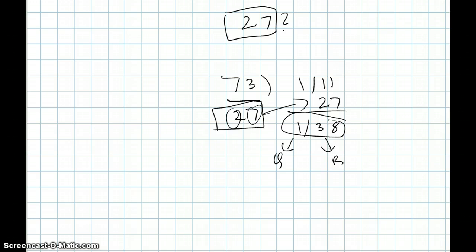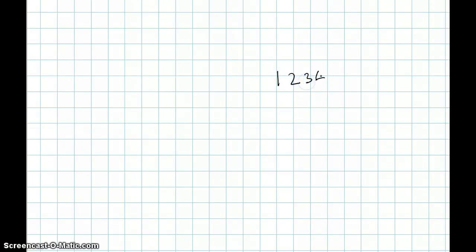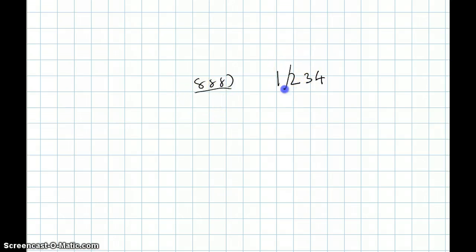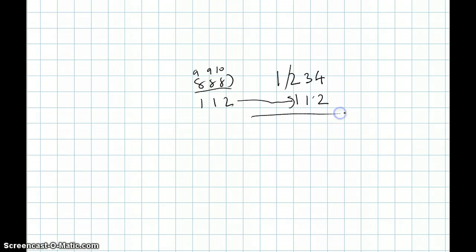Now let's try a question with three digits in the divisor: 1,234 divided by 888. We have three digits as our divisor, so we divide the dividend so the right-hand side has three digits. We use the formula: 10 minus 8 is 2, 9 minus 8 is 1, 9 minus 8 is 1 — giving us 112. We simply put 112 here and add it up: 1, 3, 4, 6. We get our quotient and our remainder.